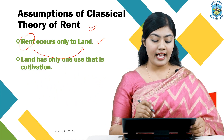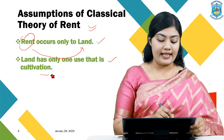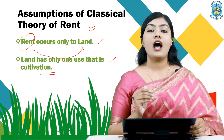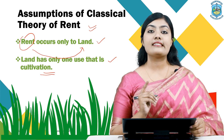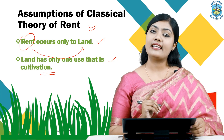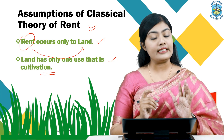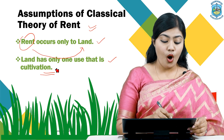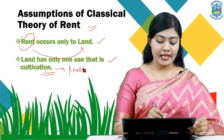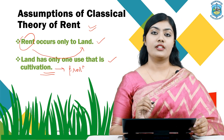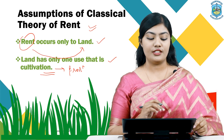The second assumption is that land has only one use: cultivation. According to Mr. David Ricardo, land has only one use — cultivation, or in a general sense, production. Apart from that, land has no other use.